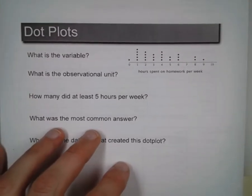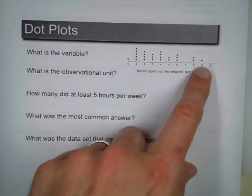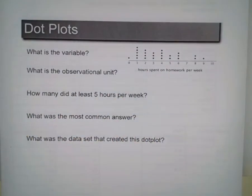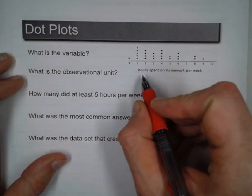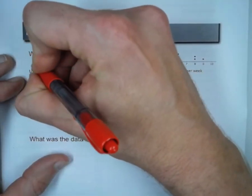So here's an example of a dot plot. Each dot represents an observational unit. So first off, first question is, what is the variable? Well, they usually tell you what the variable is right here. It's hours spent on homework per week.